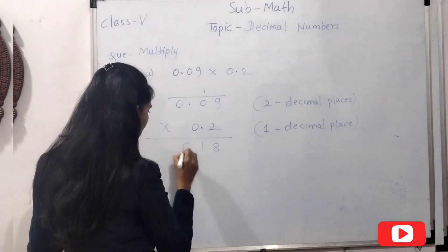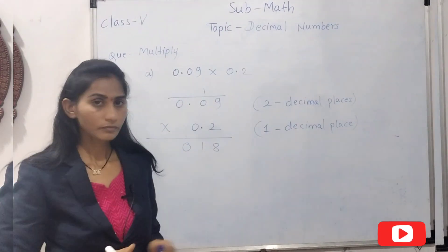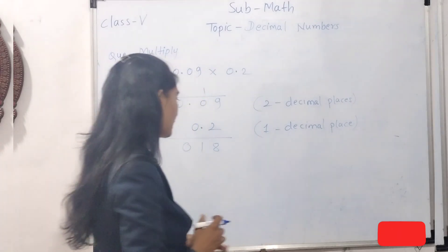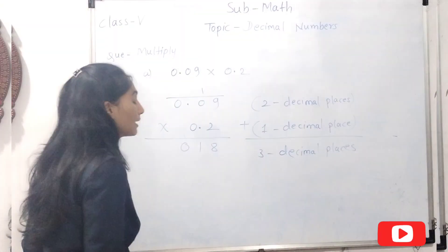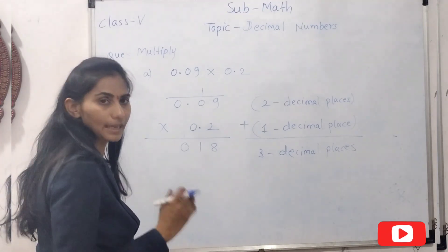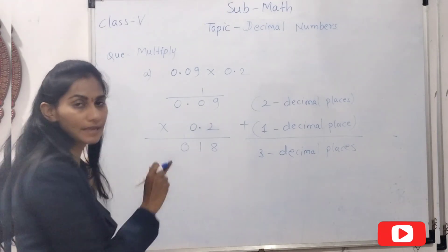Now count the total number of decimal places. Here total are three decimal places. So now starting from right and count the same number of decimal places in the product and place the decimal point there.